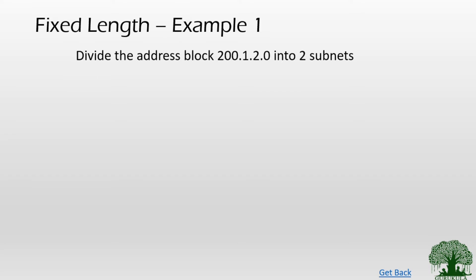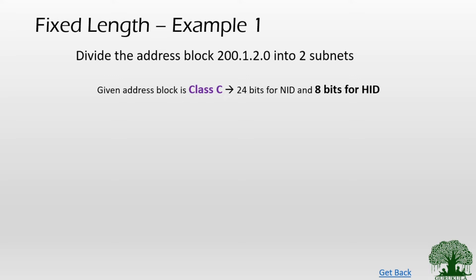Given an address block starting with 200.1.2.0, you are expected to divide this address block into two subnets. The first step is to identify which class this address block belongs to. By looking at the first byte — 200 — we can say the given address block is a class C address. For class C, 24 bits are allocated for network ID and 8 bits are allocated for host ID.